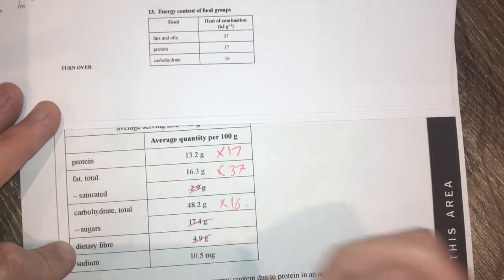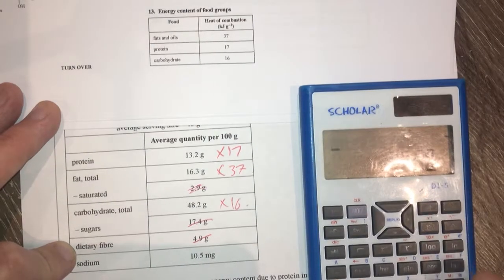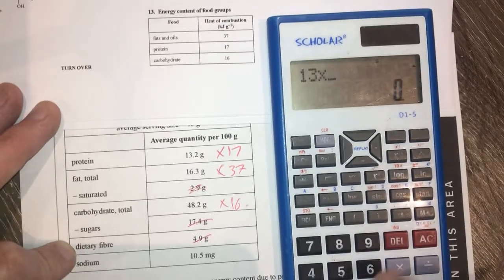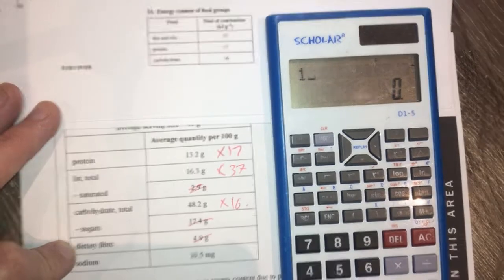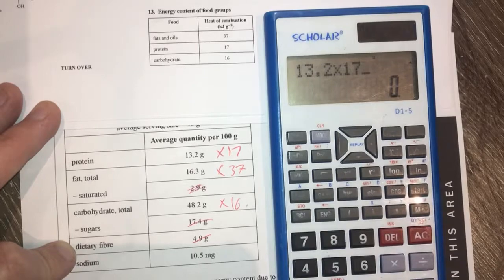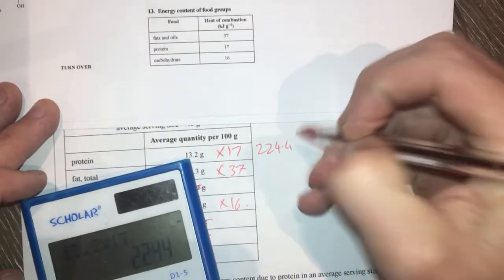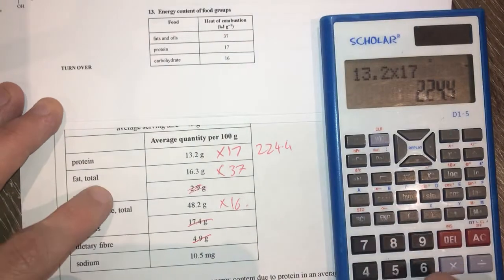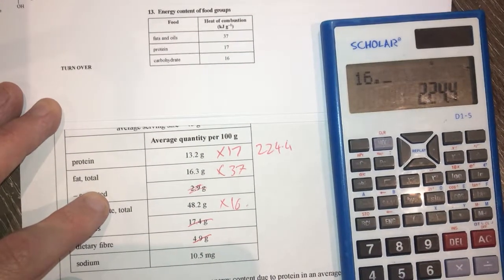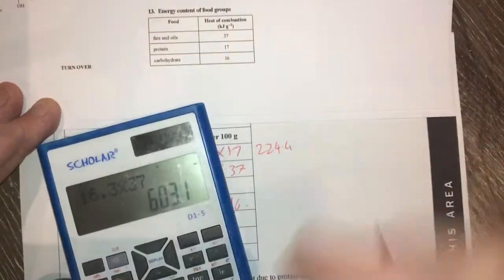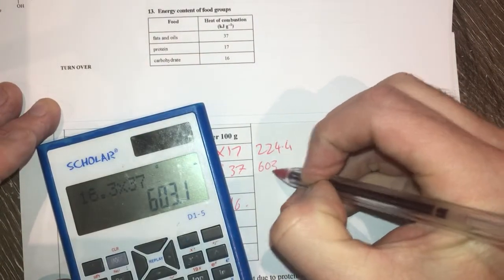Sugars are within my carbohydrate. So let's just smash these calculations out. That times 17 gives me 13.2 times 17 is 224.4. And then fats here is 16.3 times 37 is 603.1.